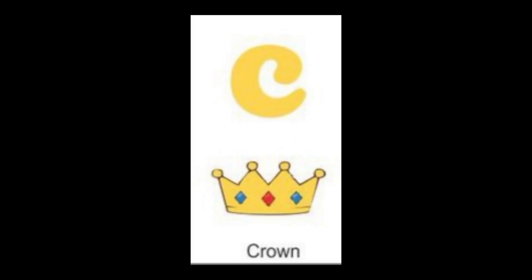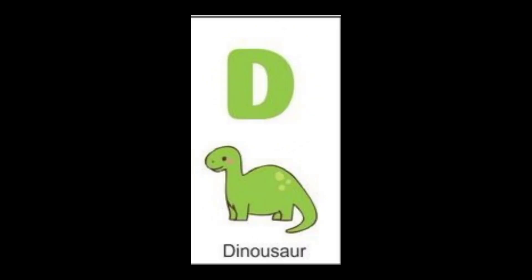The next letter is C. C for crown. The color of crown is yellow. The next letter is D. D for dinosaur. The color of dinosaur is green.